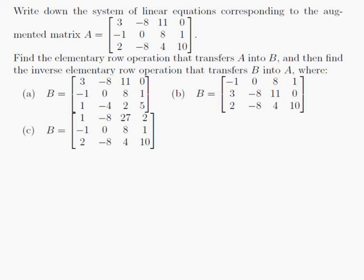Write down the system of linear equations corresponding to the augmented matrix A which is equal to this matrix here. Find the elementary row operation that transfers A into B, and then find the inverse elementary row operation that transfers B into A, where B is one of these three options.